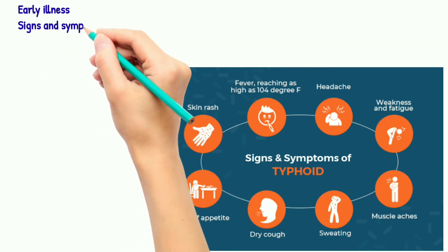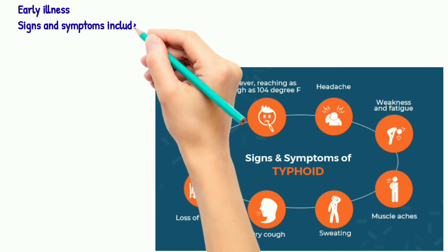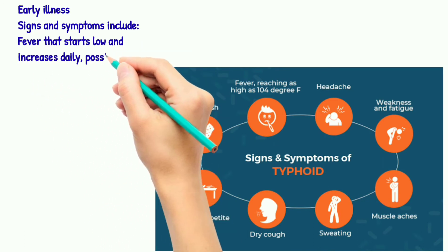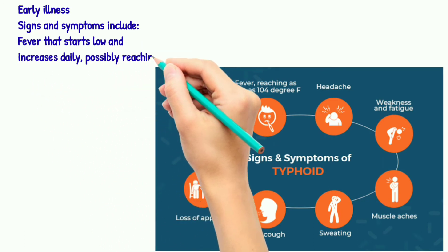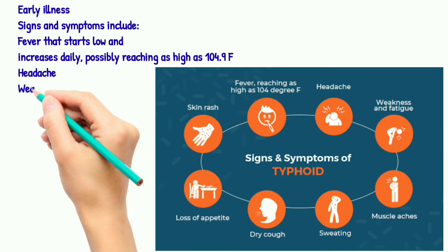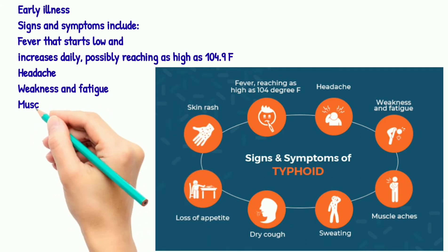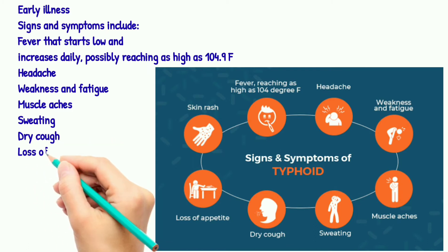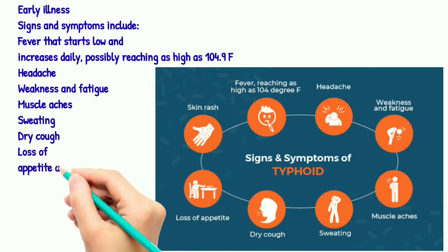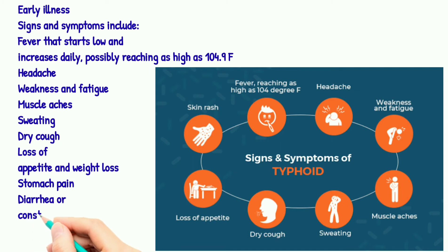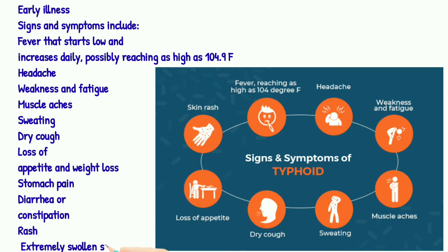Early illness signs and symptoms include fever that starts low and increases daily, reaching as high as 104.9 degrees Fahrenheit, headache, weakness and fatigue, muscle aches, sweating, dry cough, loss of appetite and weight loss, stomach pain, diarrhea, constipation, rash, and extremely swollen stomach.